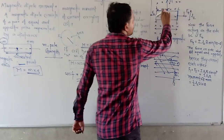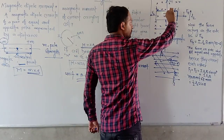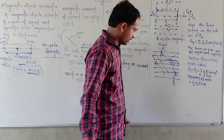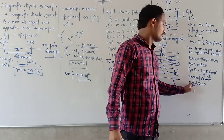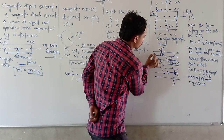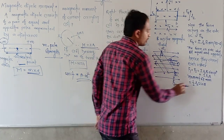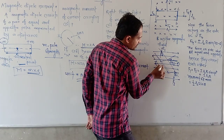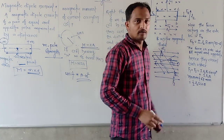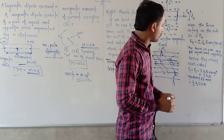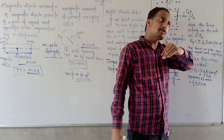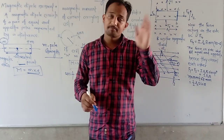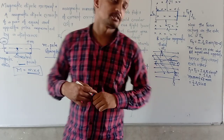Due to these forces there is a deflection by angle θ. The moment arm L2 shifts, making an angle θ with its original position, so the perpendicular distance from each of the two forces is one-half L2 sin θ.